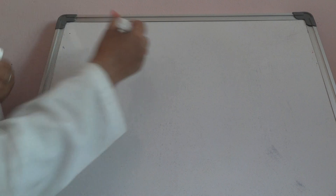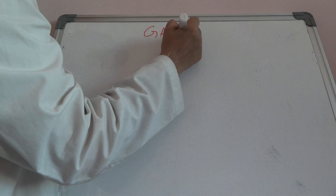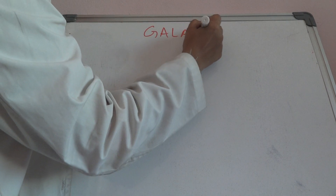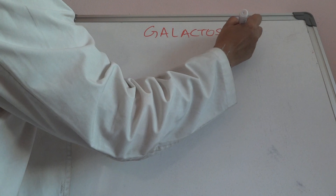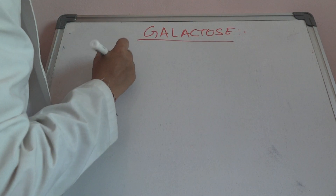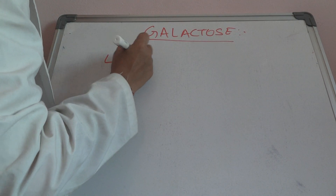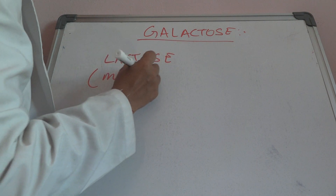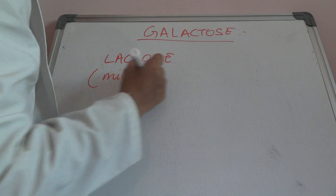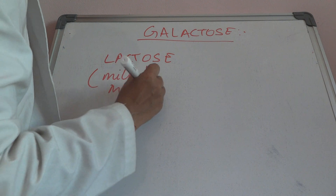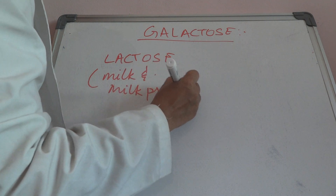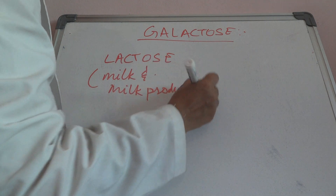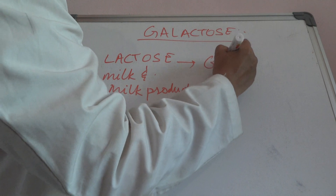Hi everybody, today we will discuss galactose metabolism. So how does galactose get into the body? Through lactose — lactose present in milk and milk products. Lactose is a disaccharide which breaks down into glucose and galactose.